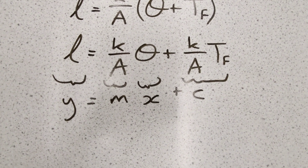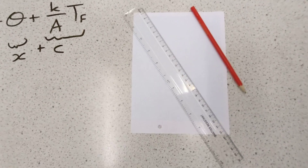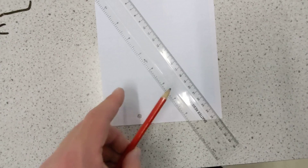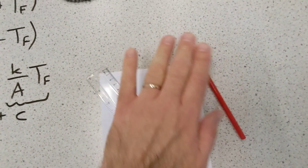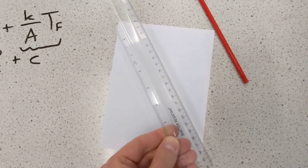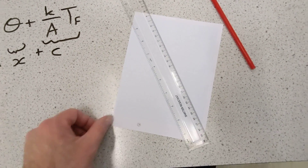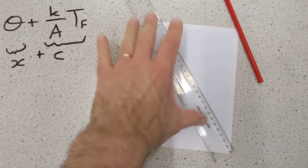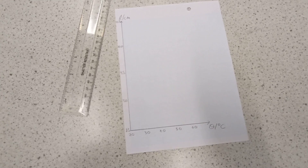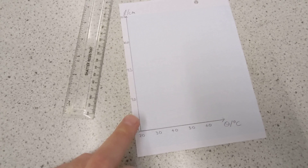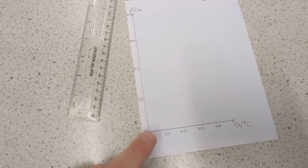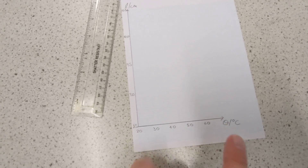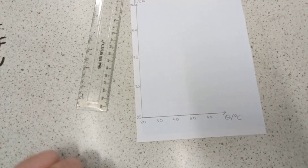I can measure the gradient from my graph of L versus theta, and then use that gradient and my intercept measurement to determine what T_f should be — and what I'm hoping is that will come out at about 273 Kelvin. The two most important items in your physics practical exam arsenal are a well-sharpened pencil and a 30-centimeter clear plastic ruler — not a 15-centimeter one, it just won't be long enough, and not two 15-centimeter rulers connected with a hinge.